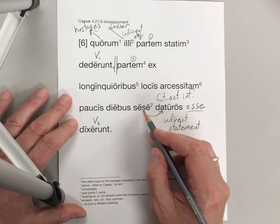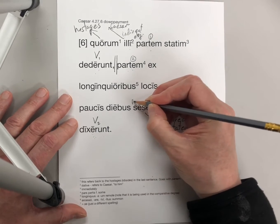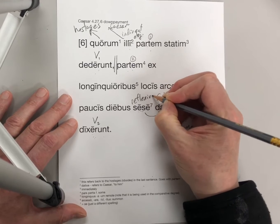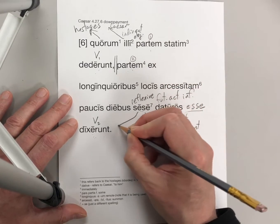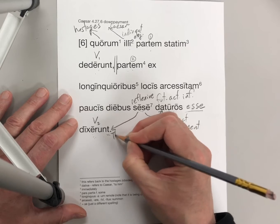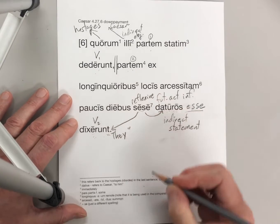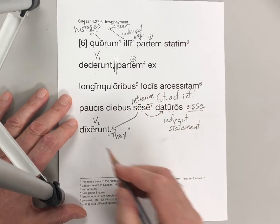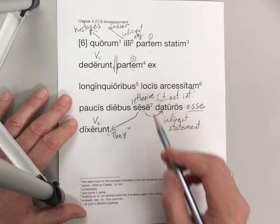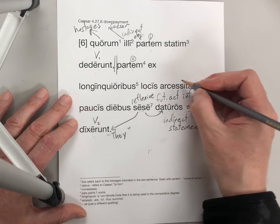They said that they would give part of them. This 'se' is the reflexive pronoun, so it always refers back to the subject of the main verb — they. They said they would give part of them back.